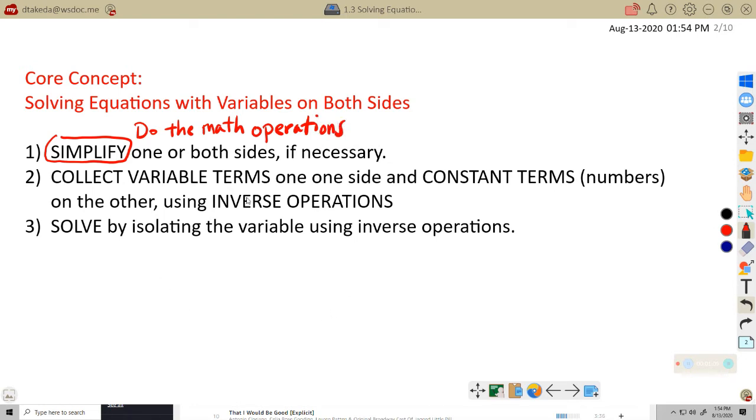Then we want to collect variable terms on one side and constant terms, the numbers, on the other using inverse operations. This is our new step. That's the lesson for today. And then number three, solve by isolating the variable using inverse operations. We know how to do that already. So we're going to focus on this idea of collecting variable terms on one side and constant terms on the other side.